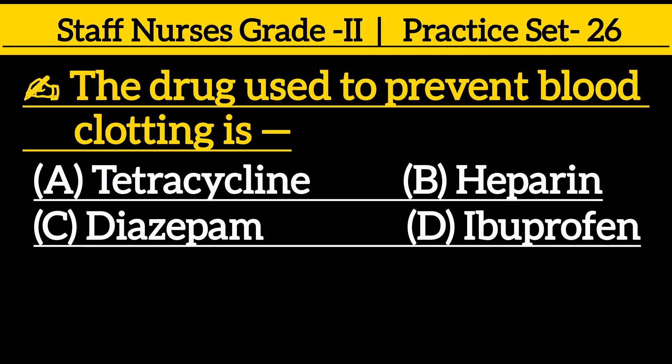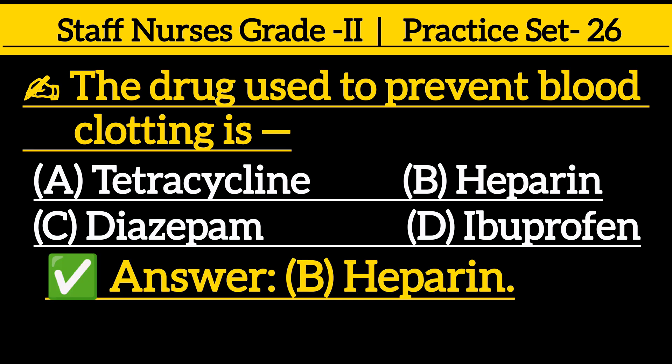Options for the next question: option A: drowsiness, option B: heparin, option C: diazepam, option D: ibuprofen. The correct answer is option B: heparin.